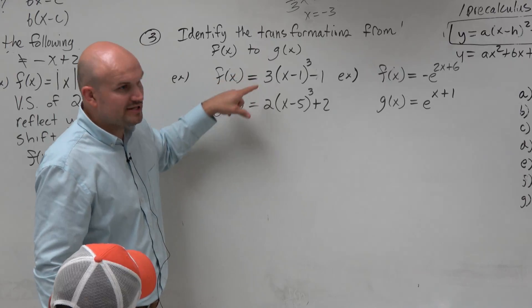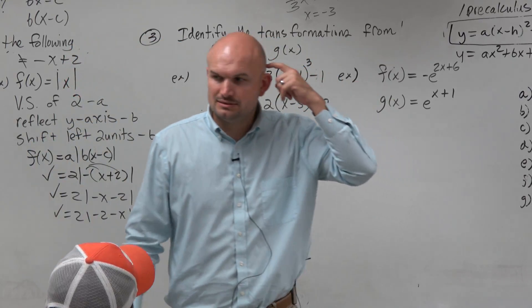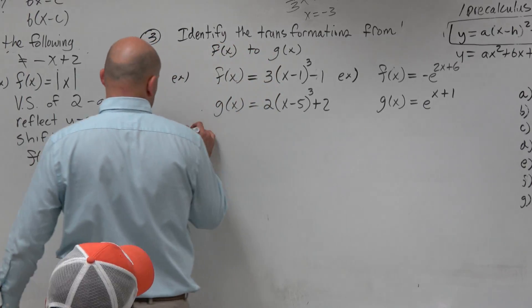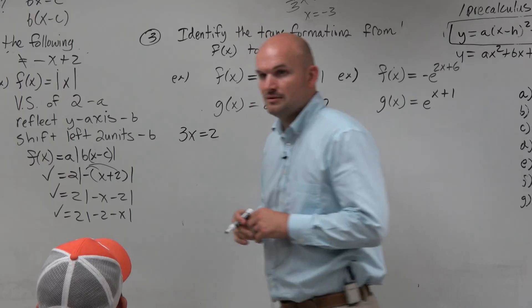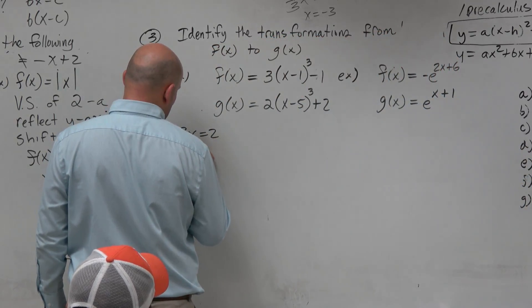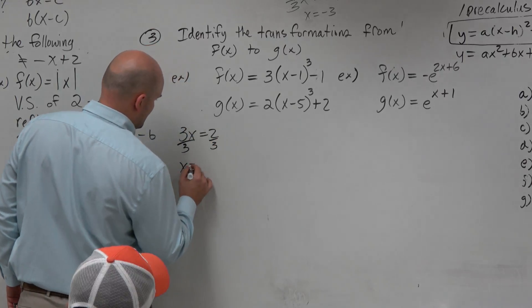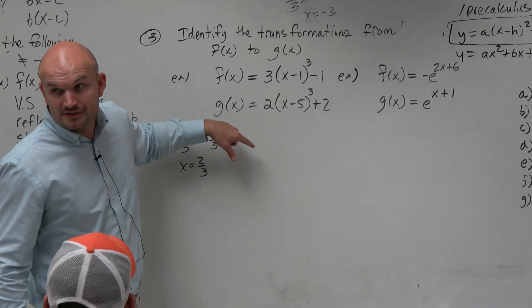So how do I go from a 3 to a 2 by multiplication? And some of you might say, I don't know. Well, let's algebraically write it out. 3 times what equals 2? 2 thirds. That's the factor. And let's see if that makes sense. If I multiply 3 times 2 thirds, don't you get to 2?